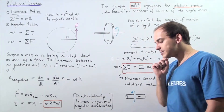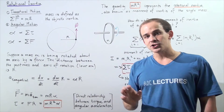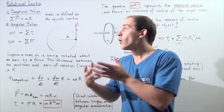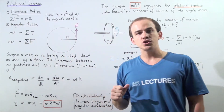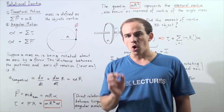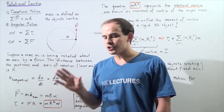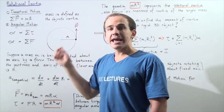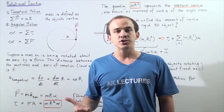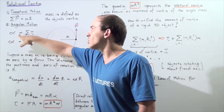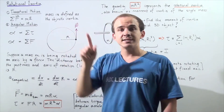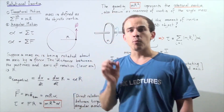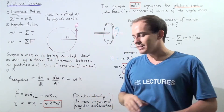Does an analogous concept of inertia exist for angular or rotational motion? In other words, can we find an analogous equation of Newton's second law of motion for angular or rotational motion? Let's begin by recalling the relationship between net force and angular acceleration. If we increase the net torque acting on the object, we increase the angular acceleration, so angular acceleration is directly proportional to net torque. And because net torque equals net force multiplied by the lever arm, angular acceleration is also directly proportional to net force.